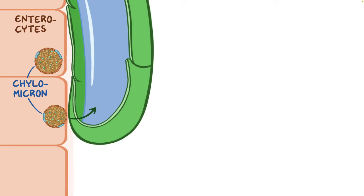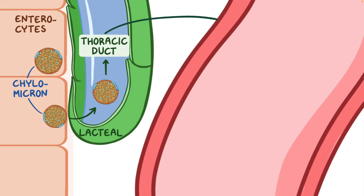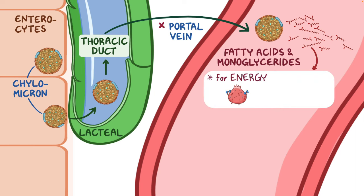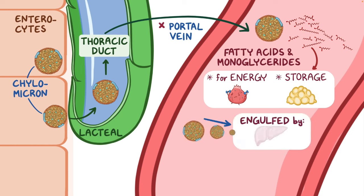The chylomicron then leaves the enterocyte, but it's too large to get into the endothelial cells so instead it enters a nearby lymphatic capillary called a lacteal. From there the chylomicron floats in the lymph and flows into the thoracic duct, and then gets dumped into the blood, essentially bypassing the portal vein. Once in the blood, the chylomicron releases fatty acids and monoglycerides in peripheral tissues like muscle, which use them for energy, as well as adipose tissue which can store them. After delivering the triglycerides, the chylomicron shrinks in size and eventually gets engulfed by the liver.